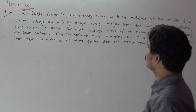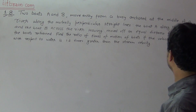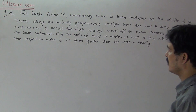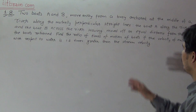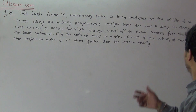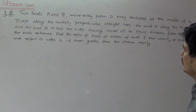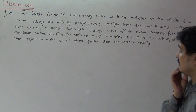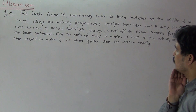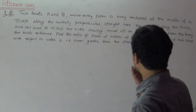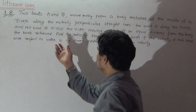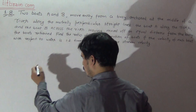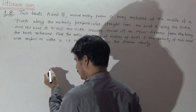The question is: two boats A and B move away from a buoy anchored at the middle of a river along mutually perpendicular straight lines — boat A along the river and B across the river. Having moved off an equal distance from the buoy, the boats return. Find the ratio of time of motion of boats A and B, if the velocity of each boat with respect to water is 1.2 times greater than the stream velocity.